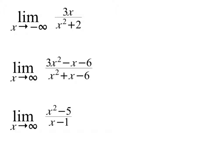On the top of this first one, our degree is 1. On the bottom, our degree is 2. That means it is bottom-heavy. Whenever it is bottom-heavy, we have a horizontal asymptote at y equals zero — every single time when it is bottom-heavy like that. If you have trouble remembering that, just think of a really simple bottom-heavy rational like 1 over x and think about where the asymptote is.